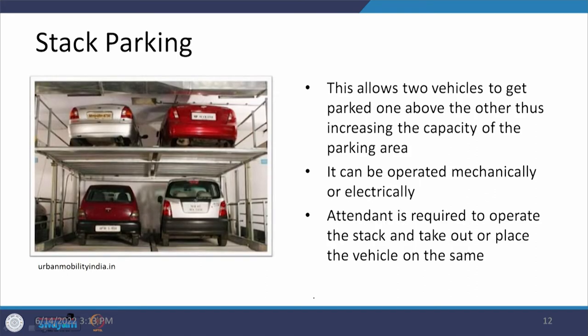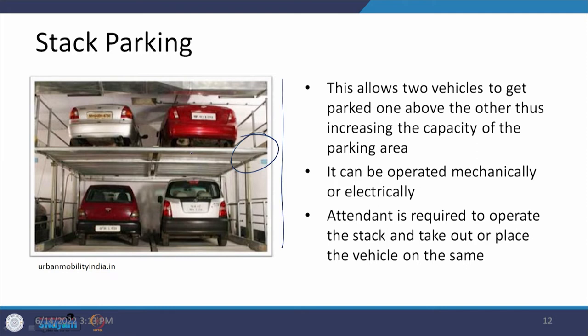Stack parking uses a mechanical lift system to park vehicles one above the other, increasing the capacity of the same parking area. A movable floor moves up and down — two vehicles can be parked on the upper level and two at ground level, so instead of 2 spaces, there are now 4. A capacity of 100 thus becomes 200. An attendant is required to operate this floor up and down, which can be considered a form of employment generation.